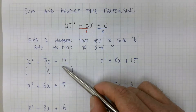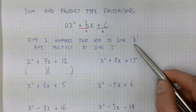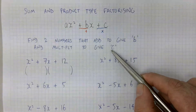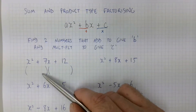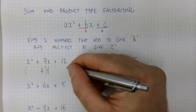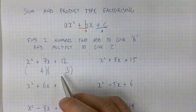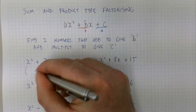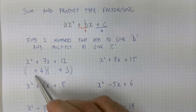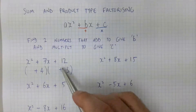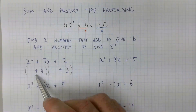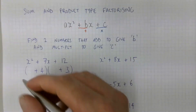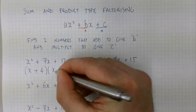Once you've worked out the two numbers that add to give b and multiply to give c, those are the numbers that go in the back of your brackets — it doesn't matter which order, so 4 and 3 either way. Notice both numbers are positive, so we put a plus sign in the middle of each set of brackets. Positive 4 × positive 3 = positive 12, and positive 4 + positive 3 = positive 7. The x term goes at the front of each bracket.